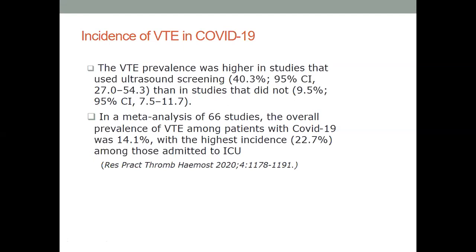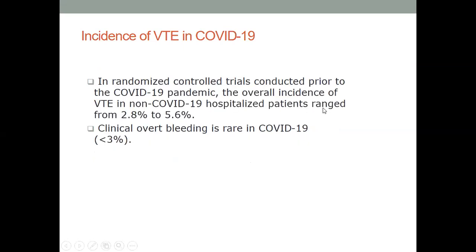A recent data analysis of 66 studies showed the true nature of incidence to be around 14 percent, with the highest incidence around 23 percent among ICU patients. In a randomized control trial conducted prior to the COVID-19 pandemic, the background in-hospital thrombosis rates in non-COVID hospitalized patients were close to 2.8 to 5.6 percent — quite different from what we've seen with COVID.